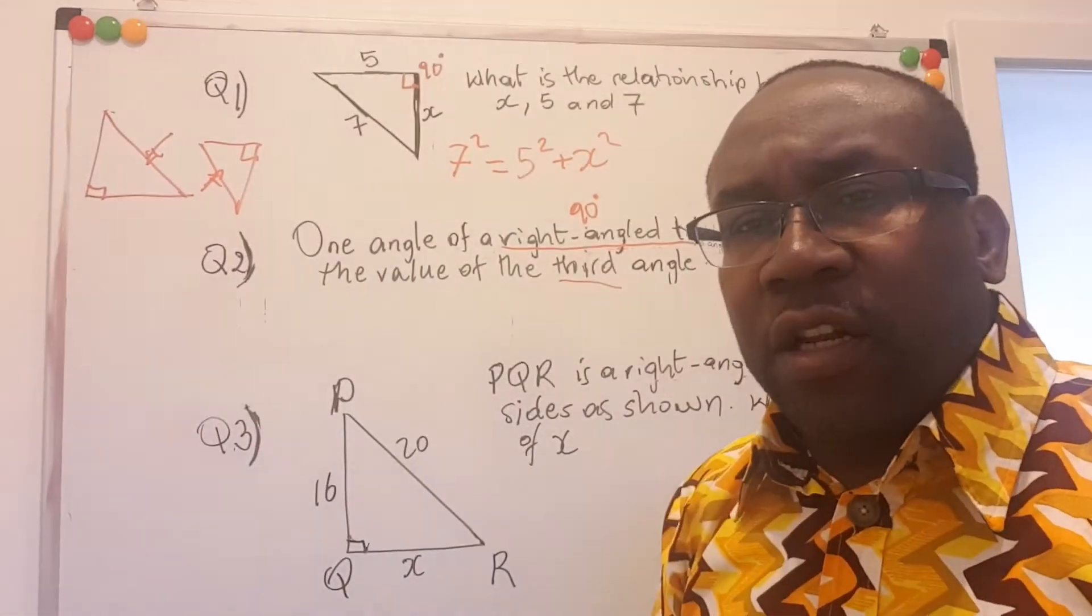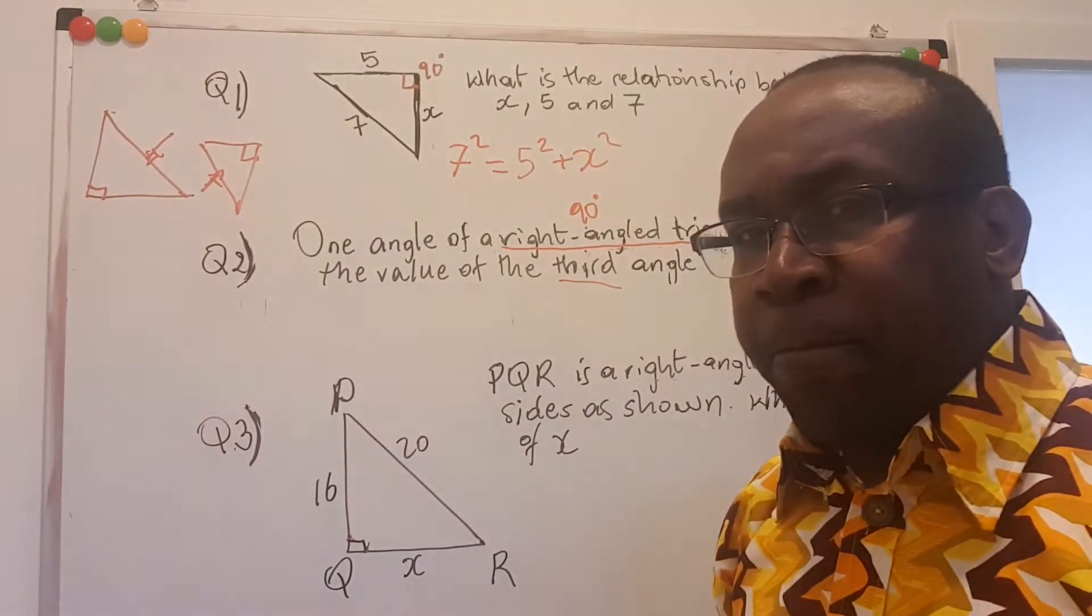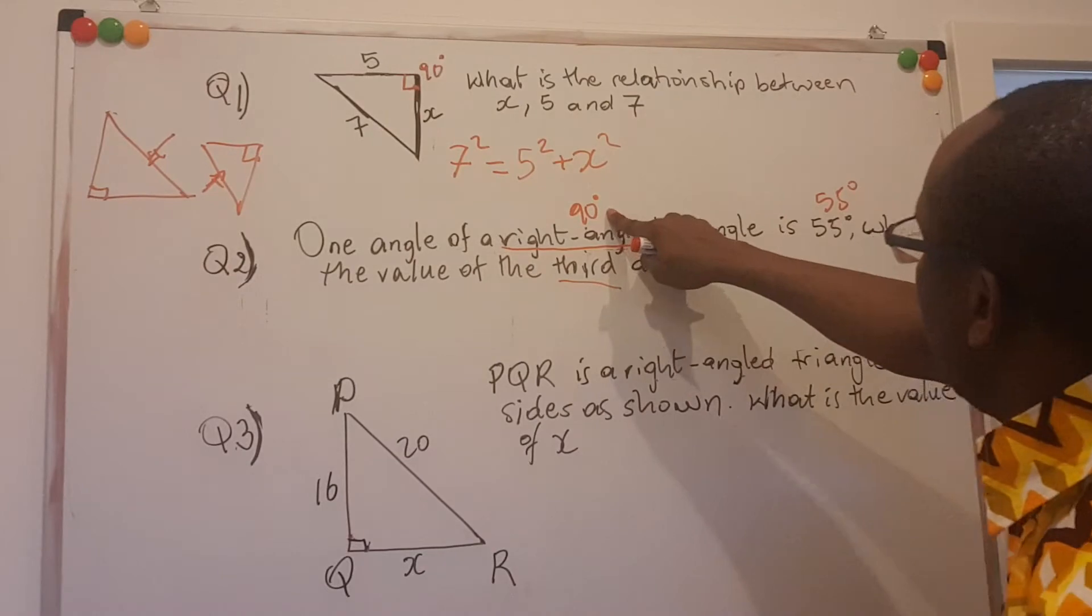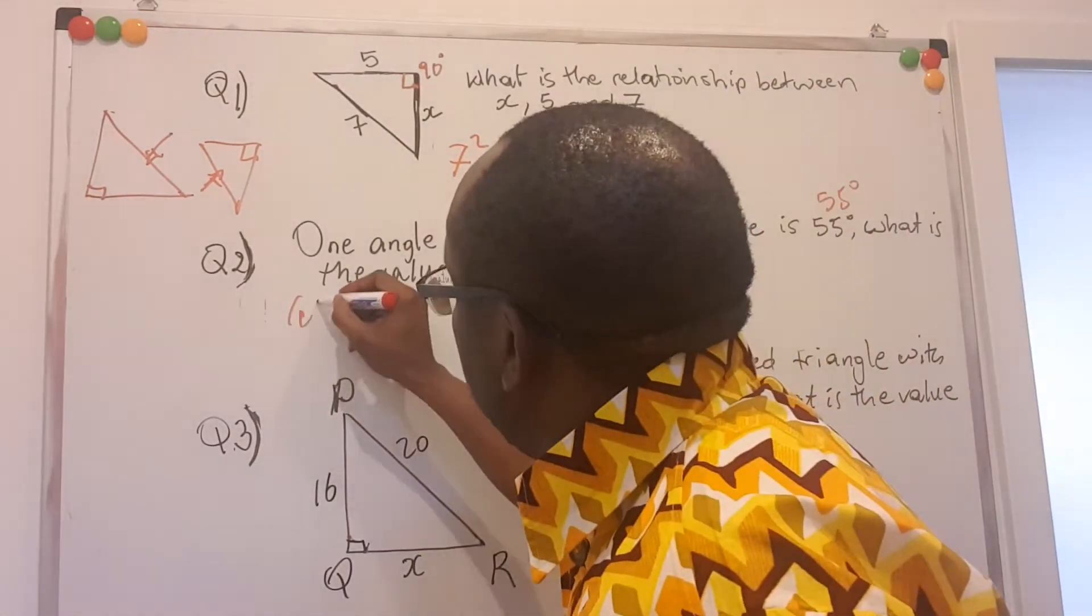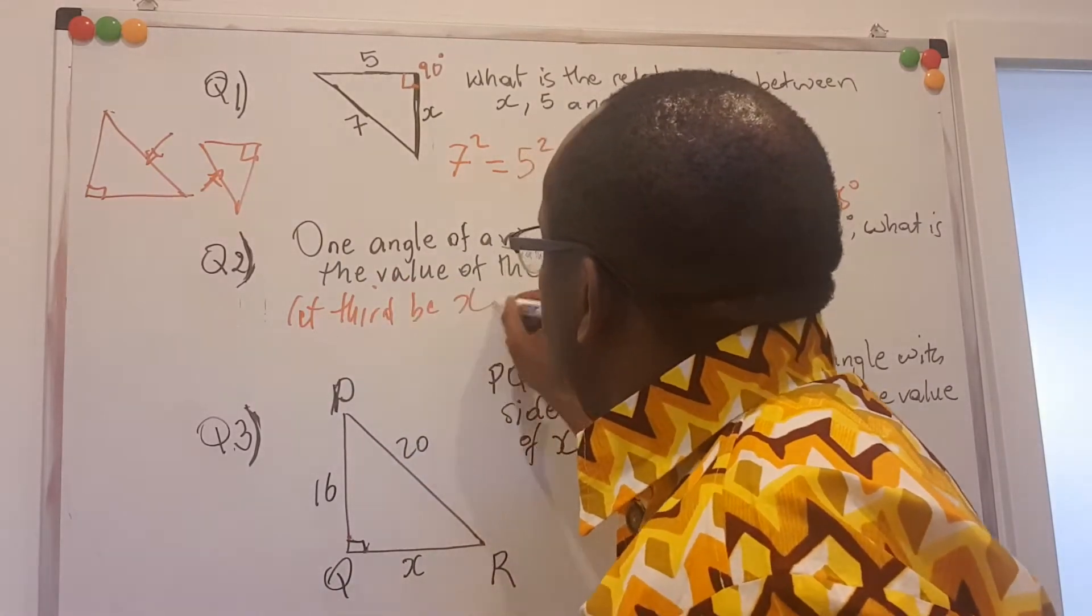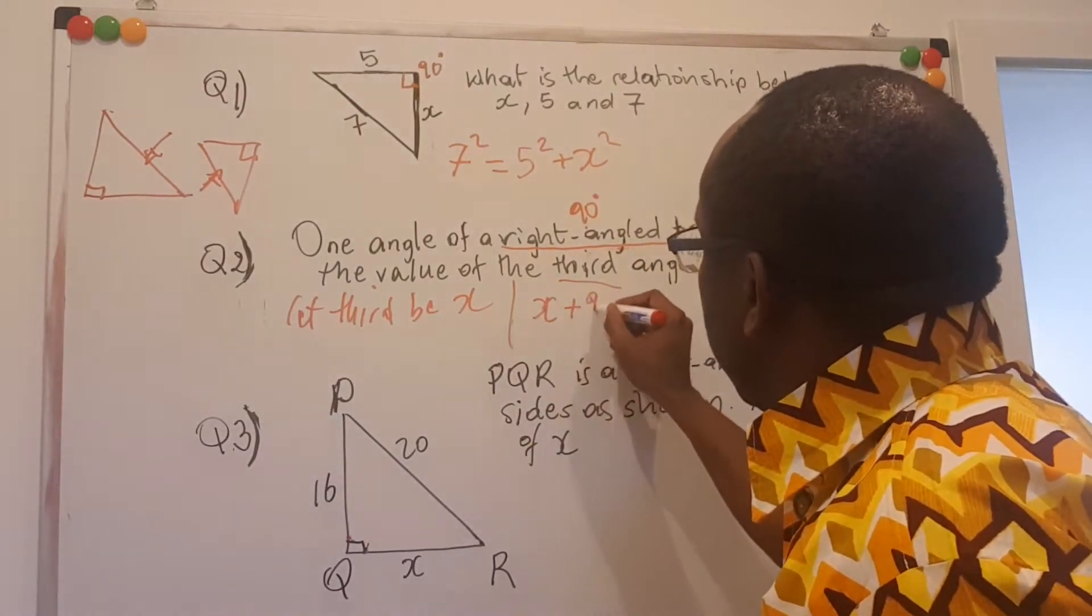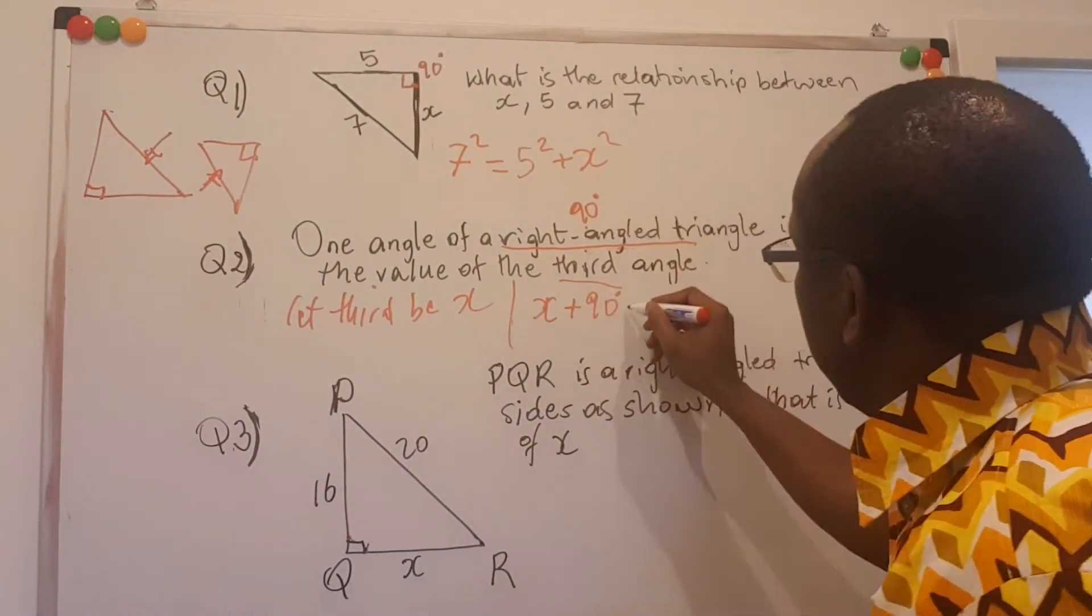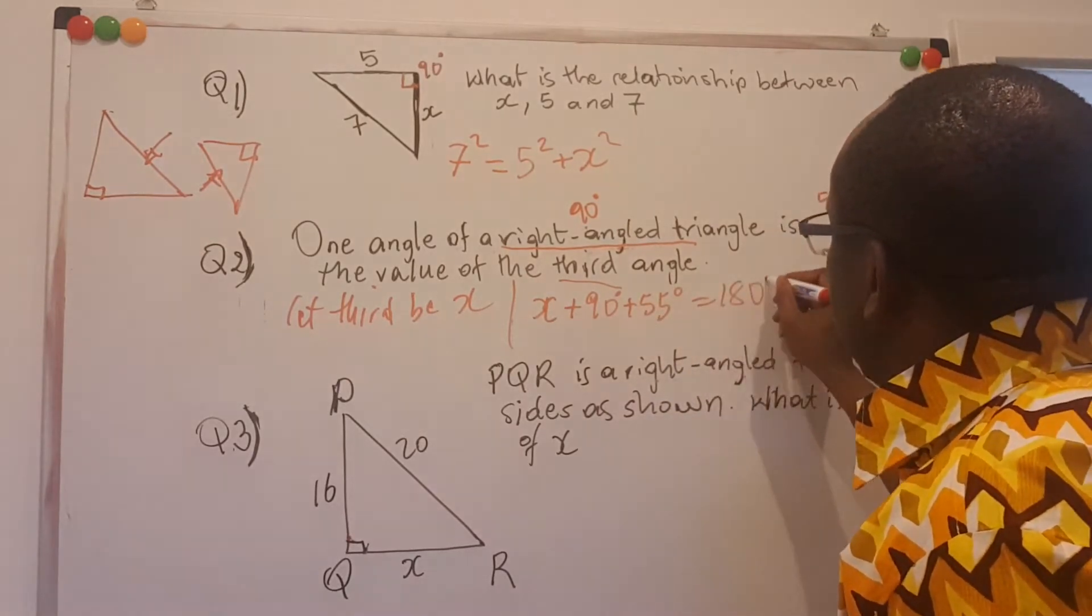For the triangle, the sum of all its three angles is equal to 180 degrees. So I would expect that 90 degrees plus 55 degrees plus this third angle that we can call x. Let's say, let that angle be x. Then it means x plus 90 degrees, this one, plus 55 degrees should be 180 degrees.